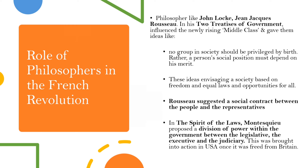Jean-Jacques Rousseau in his Two Treatises of Government proposed a social contract between the people and their representatives. Montesquieu in his book Spirit of Laws proposed a division of power within the government between the legislative, the executive, and the judicial — which is very similar to our government system nowadays.